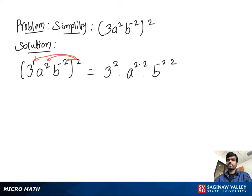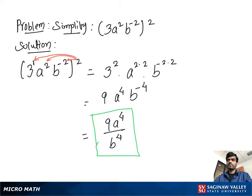Now we get 3 squared, which is 9, a to the positive 4, and b to the negative 4. To make the power of b positive, we move b to the denominator, giving us our final answer: 9a to the 4 over b to the positive 4.